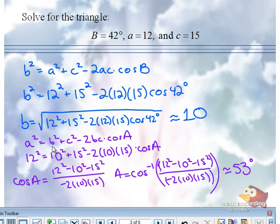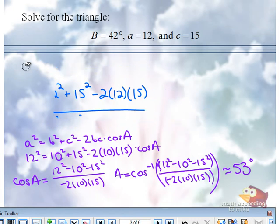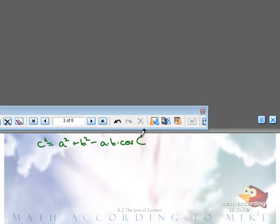All right. While we're here, let me erase the top part. What I would like you to do is set up for C, angle C. What do we get for C, angle C, with c 15? A was 12, and b was 10.